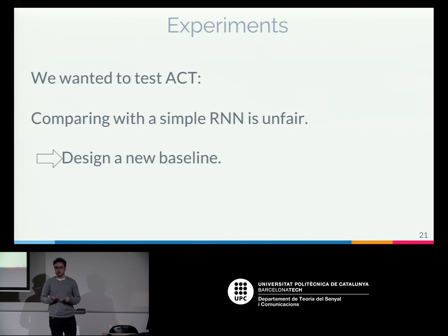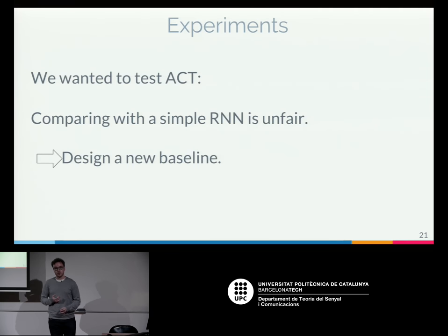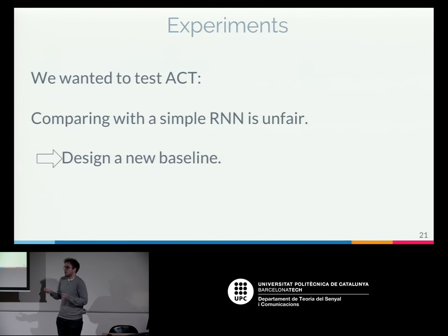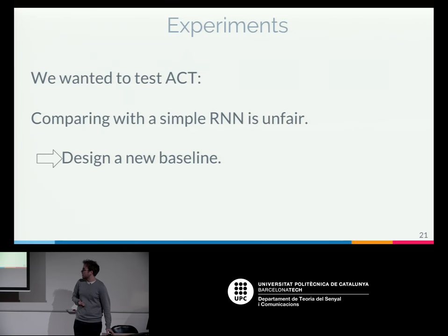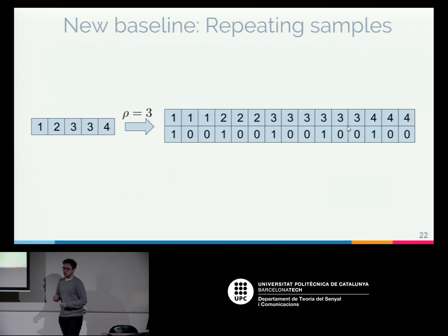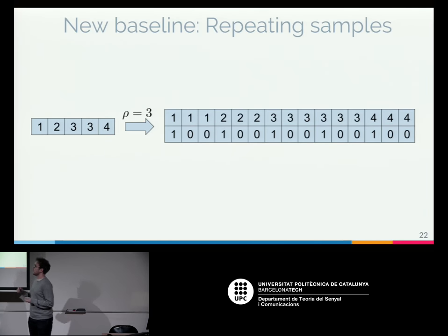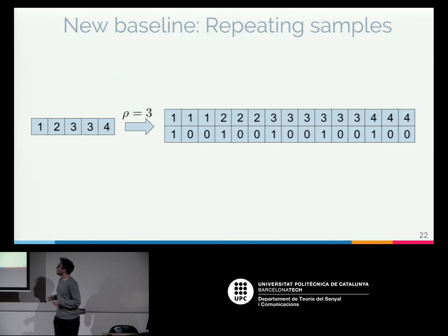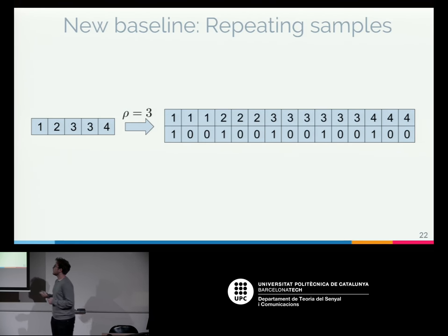To test ACT, the original paper compared it only to a simple recurrent neural network. We decided that wasn't fair, since ACT looks at each input more than once while a simple RNN looks at it once. So we designed a new baseline: fix a number and repeat each input of the sequence that many times — for example repeating each input three times, so the sequence 1,2,3,4 becomes 1,1,1,2,2,2,3,3,3,4,4,4. We also added a binary flag, as in the original paper, to tell the network when it is seeing a new original input.